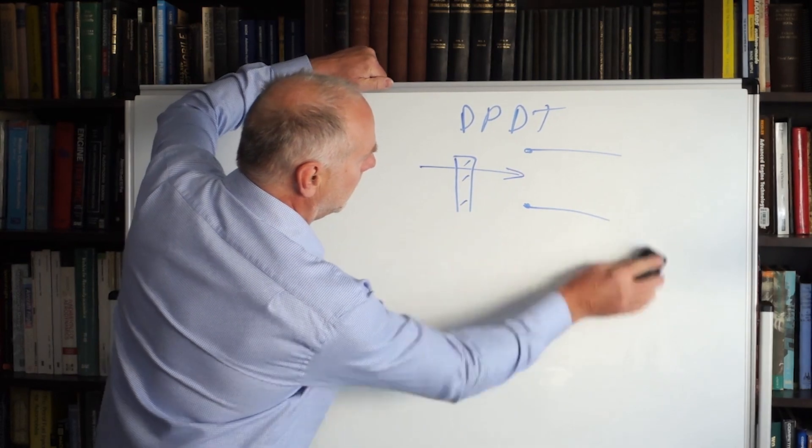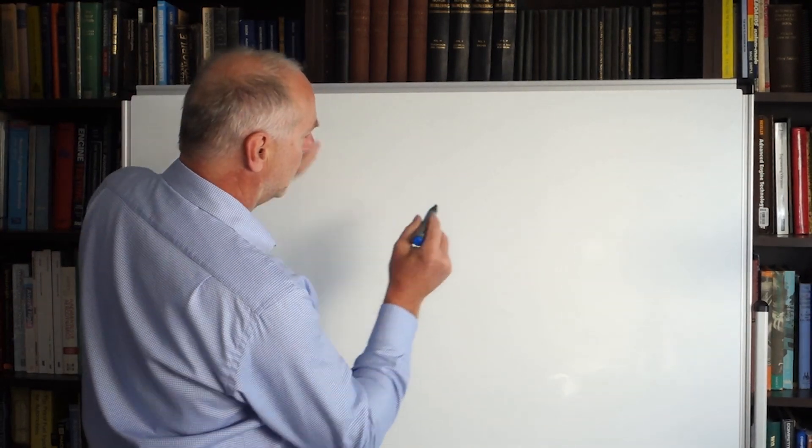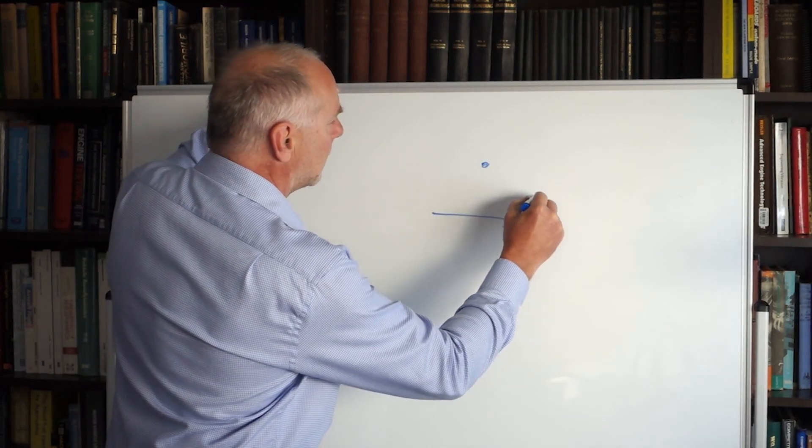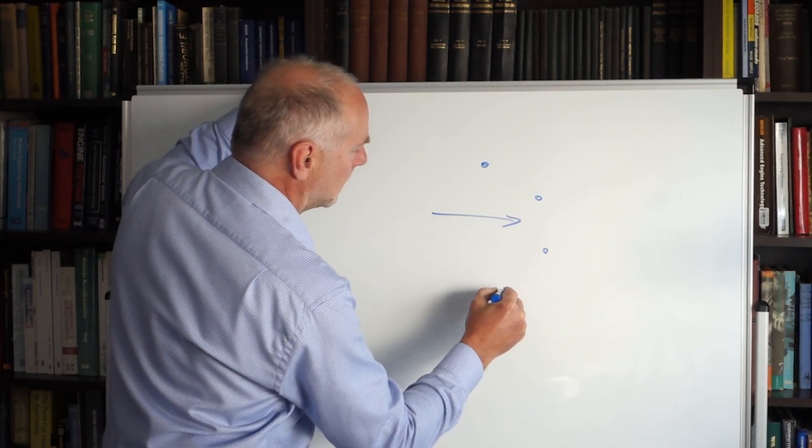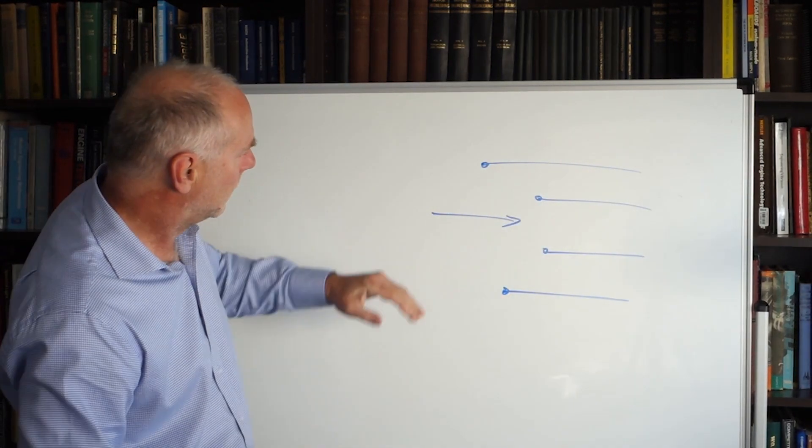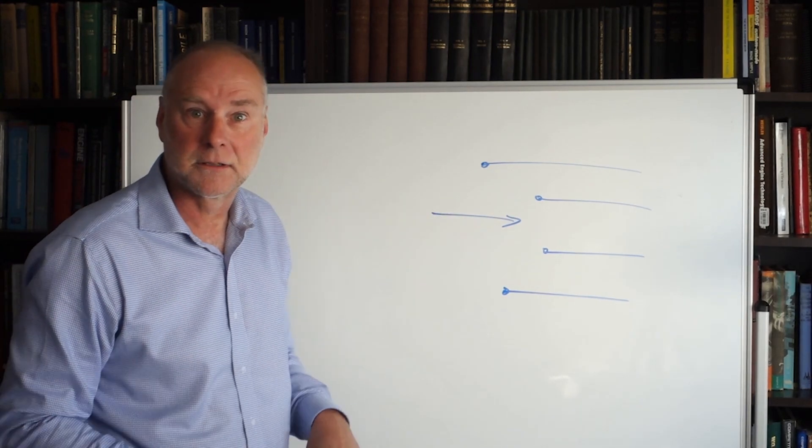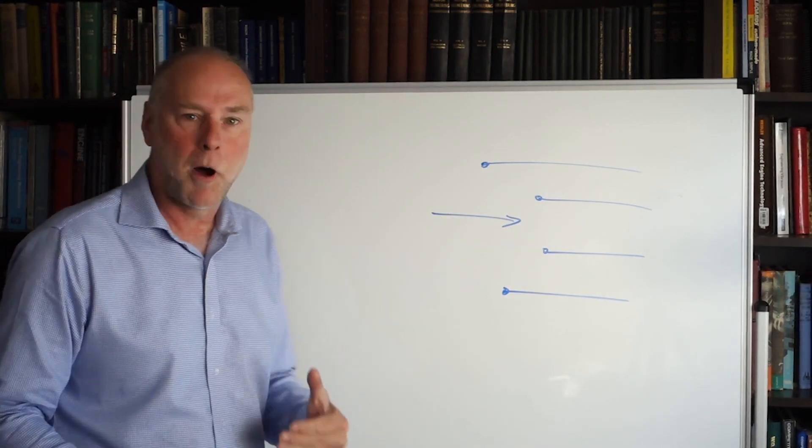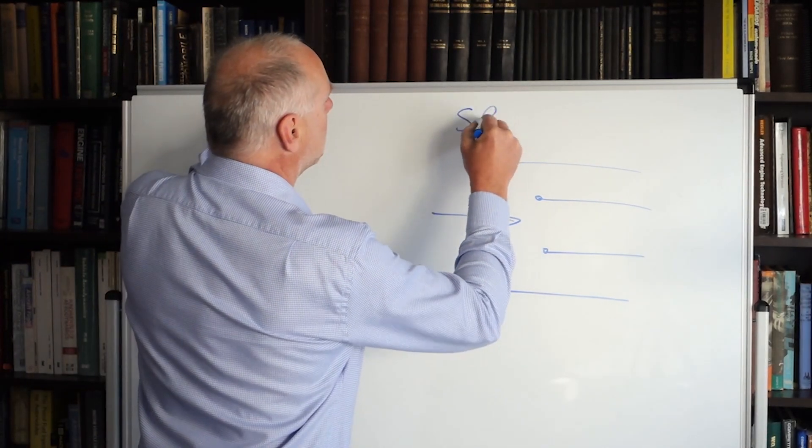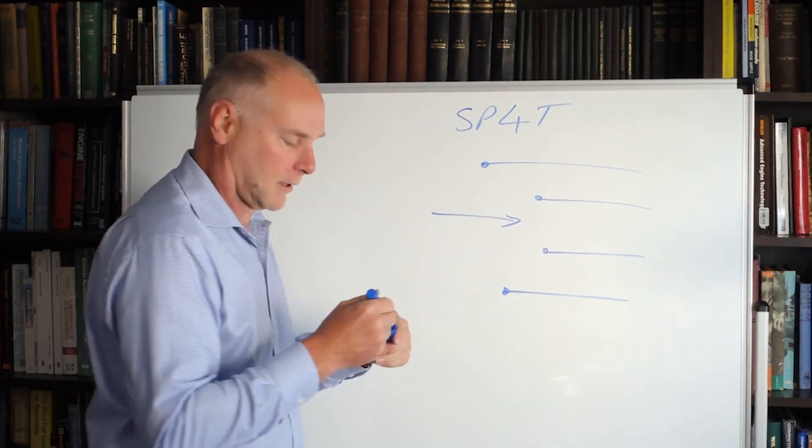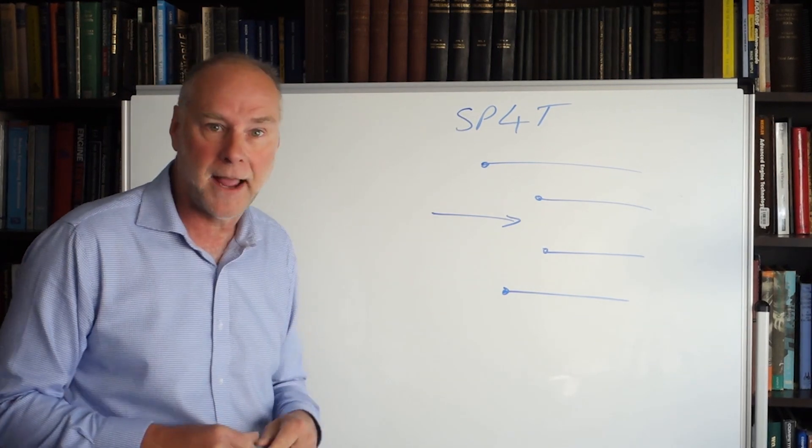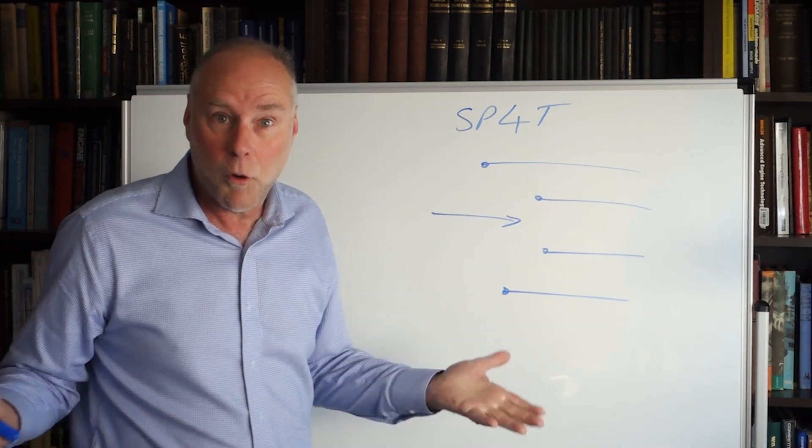What about this one? We have a single pole. We all know what that means now. And then look. What we can do is we can switch it to four different positions. Now we could call it a single pole quad throw but we don't do that. We call it a single pole four throw. And it's a rotary switch. We go click click click and we can switch it to each of those different outputs. And you can get rotary switches which have got even more throws.